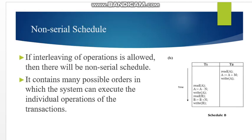Then we have non-serial schedule, which is actually the opposite of serial schedule. If the interleaving of operations is allowed, that is called non-serial schedule. It contains many possible orders in which the system can execute the individual operations of a transaction. We can expect one schedule which is a combination of multiple transactions, and the amount of instructions executed from T1 and T2 will vary according to the processor where it is actually getting executed. There is no such order which is preserved when we consider non-serial schedule.